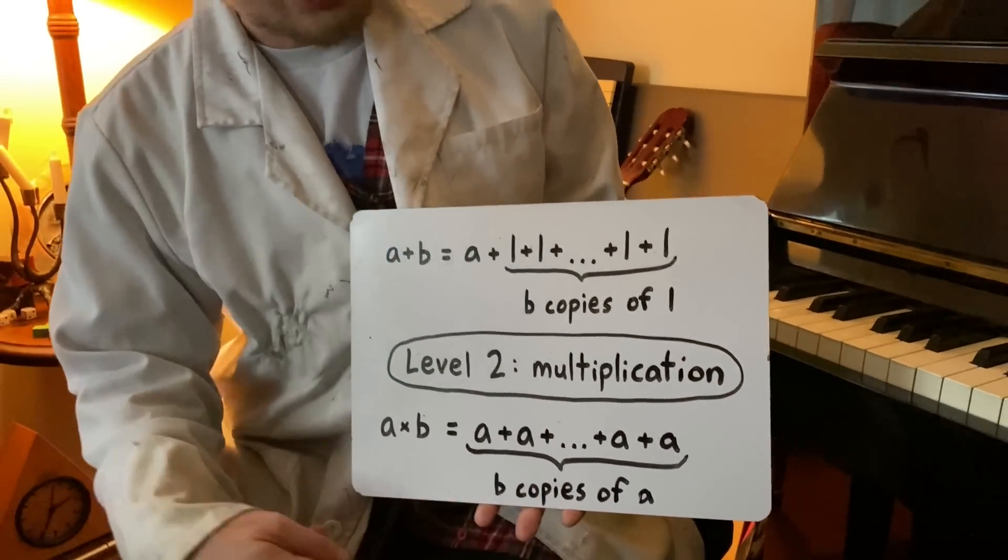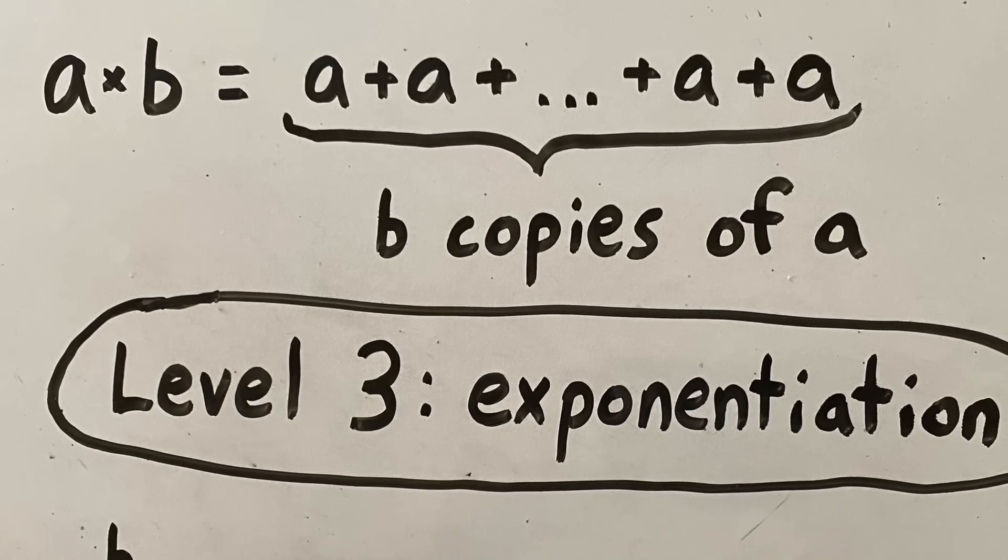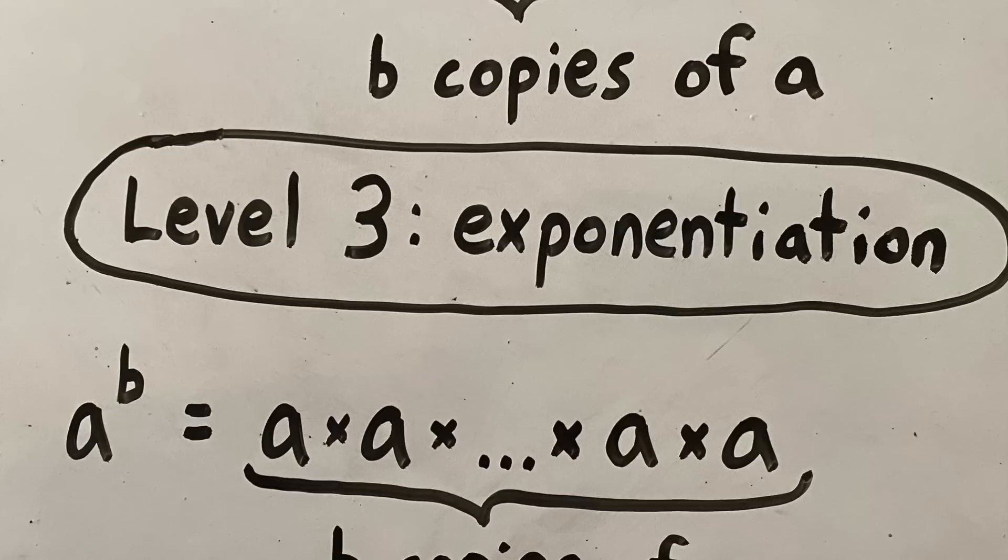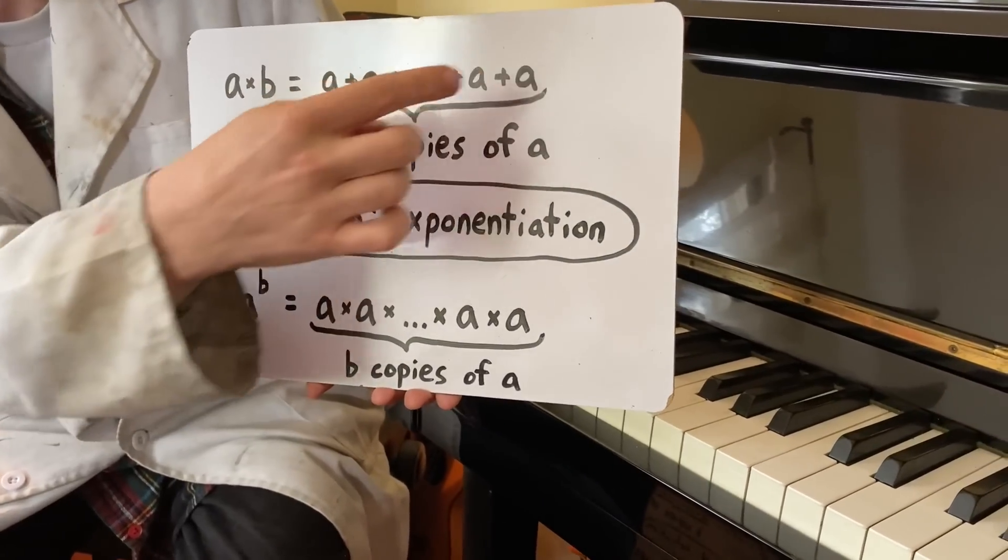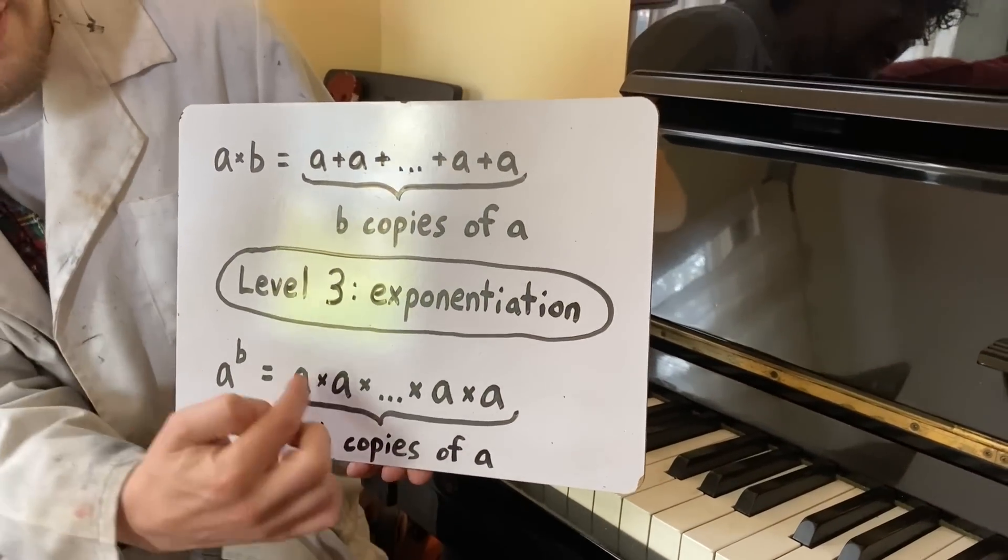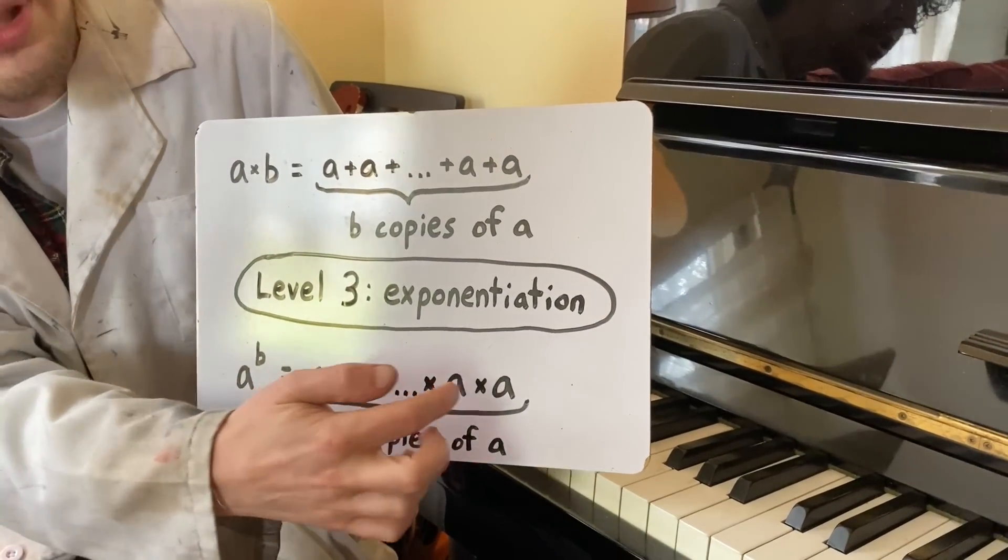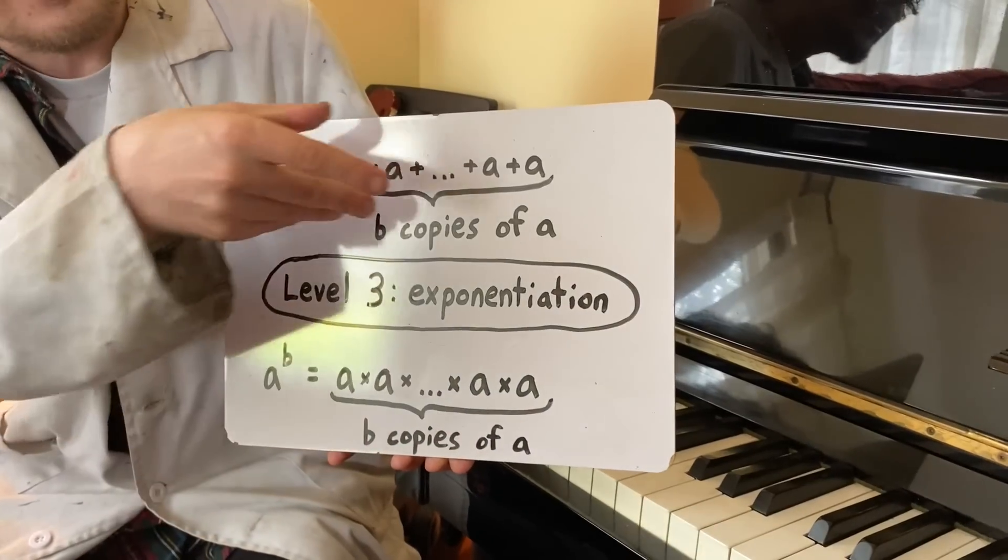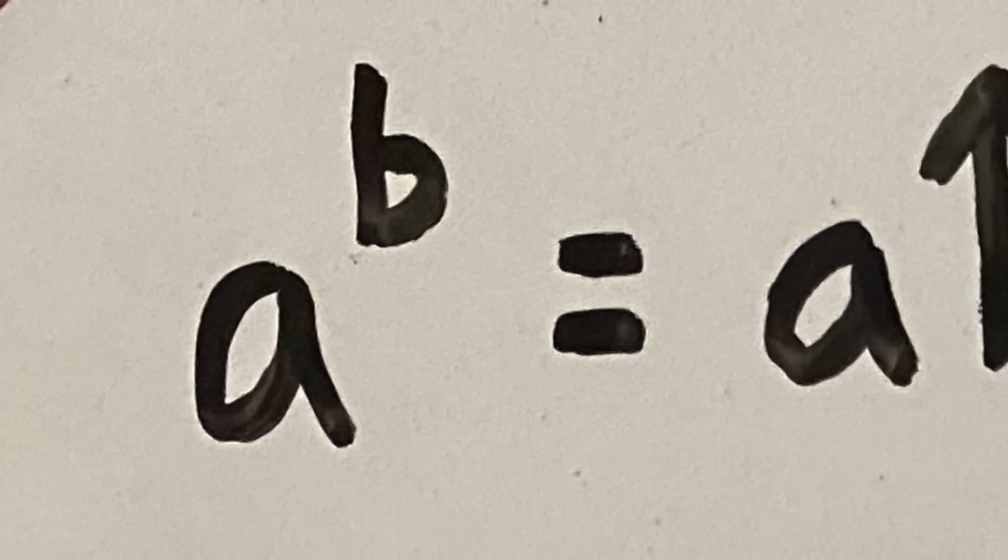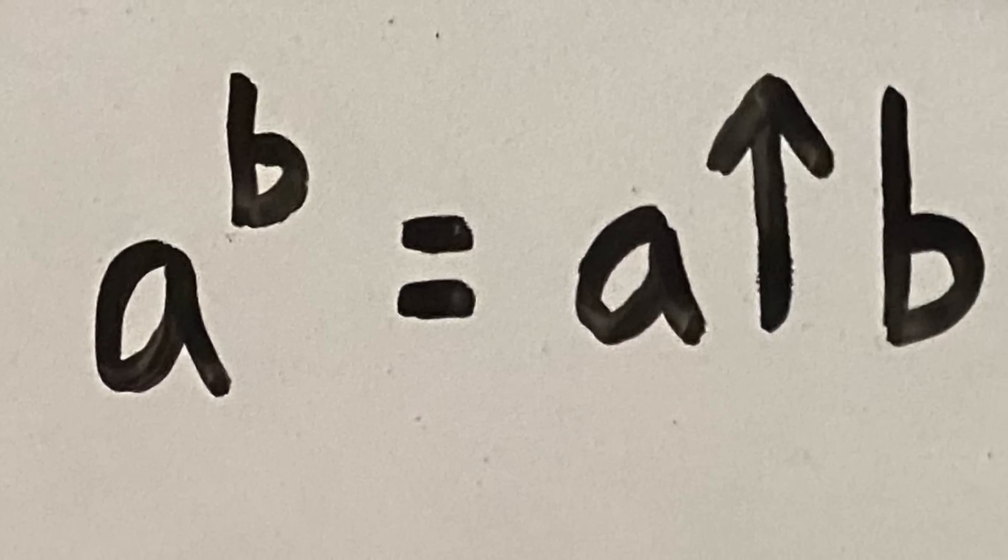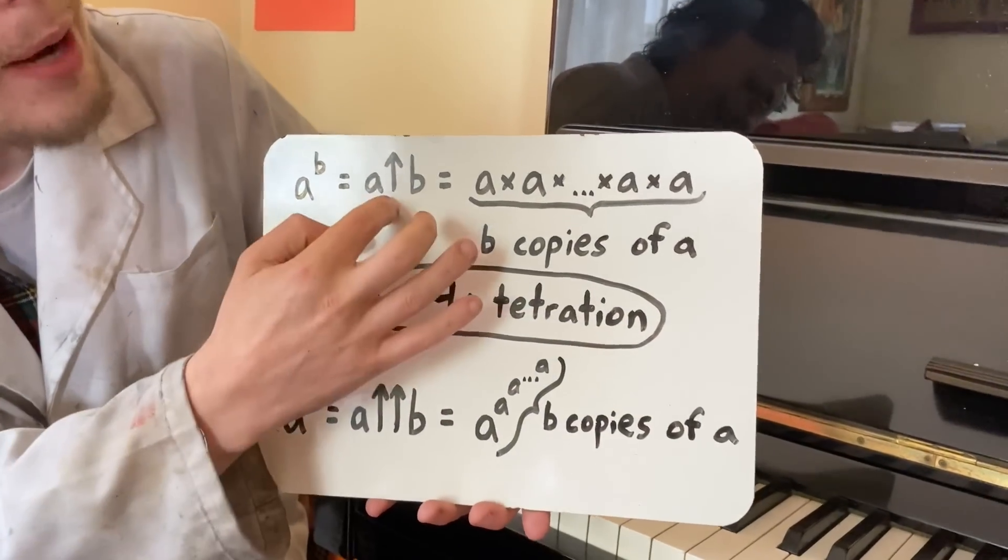To move from the second level of multiplication up to level three exponentiation, all we have to do is repeat the last operation. Instead of now making b copies of a added, we're making b copies of a multiplied, because a to the power of b really just means a times a times a, b times. We've repeated the last operation. To move up from exponentiation, which we're also going to add a new notation for, we can use these upward arrows to signify these further hyper operations.